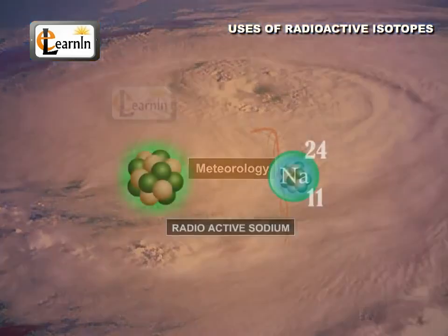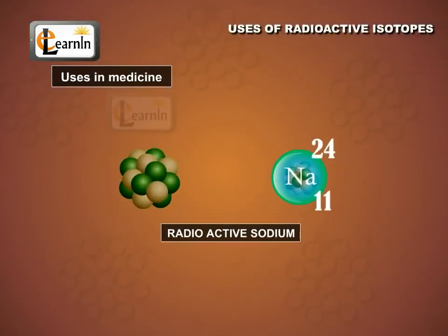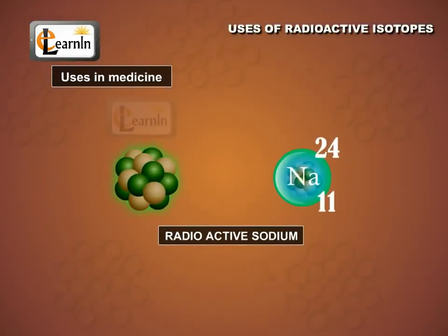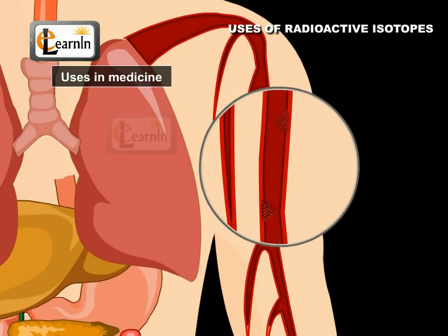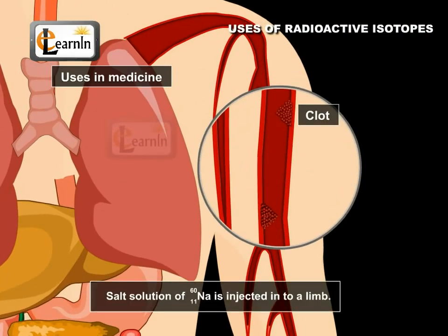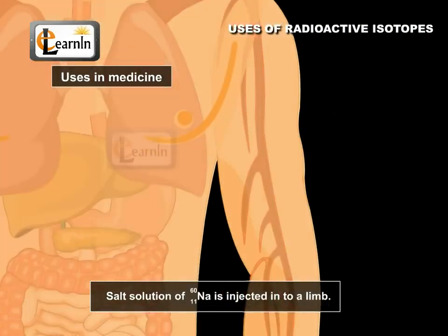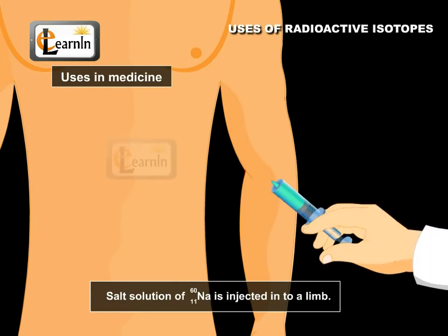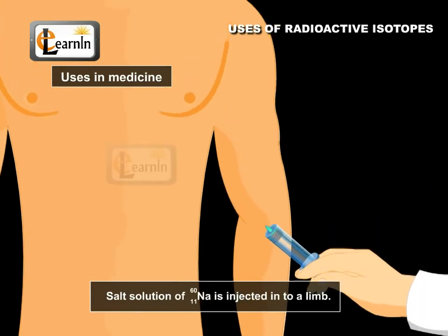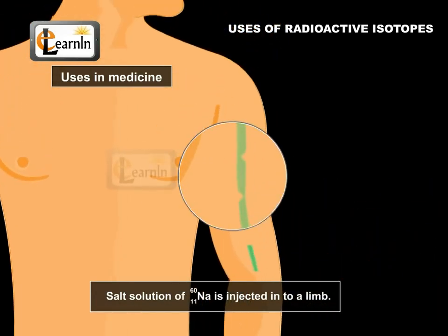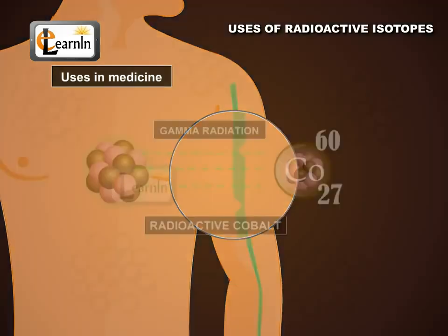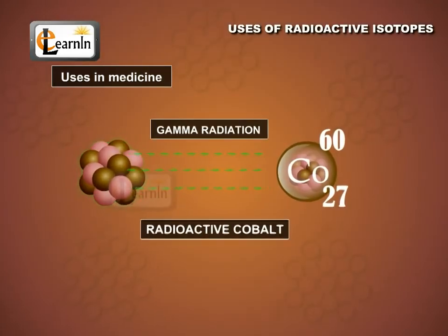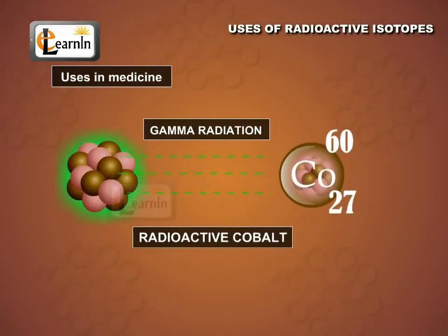Several examples in the field of medicine are: radioactive sodium is used to detect a clot in the human body. A different isotope of sodium is injected into the limb and its flow rate in the body is studied.